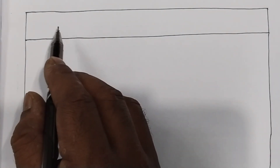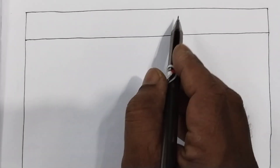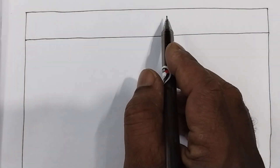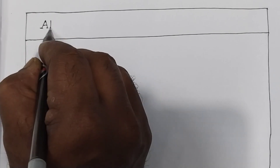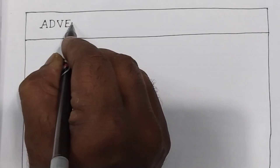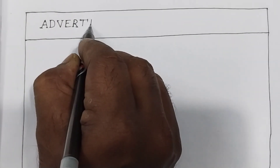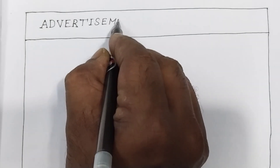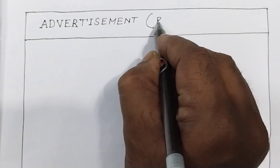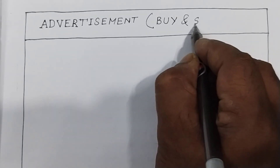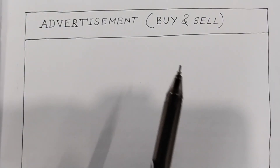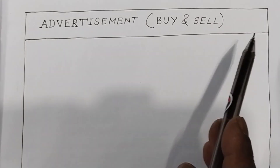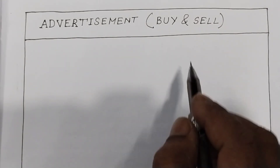The first box is called 'advertisement' and the bracket is called 'buy and sell'.